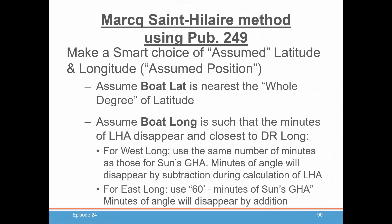All that means is the tables in publication 249 are for whole number degrees. But most likely, you are not exactly at a whole number degree of latitude or longitude. What this assumed position allows us to do is to use those tables successfully and then use that information to plot our position on a chart — to draw a line of position on our chart, actually. So, what do we mean by making a smart choice of assumed latitude and longitude?